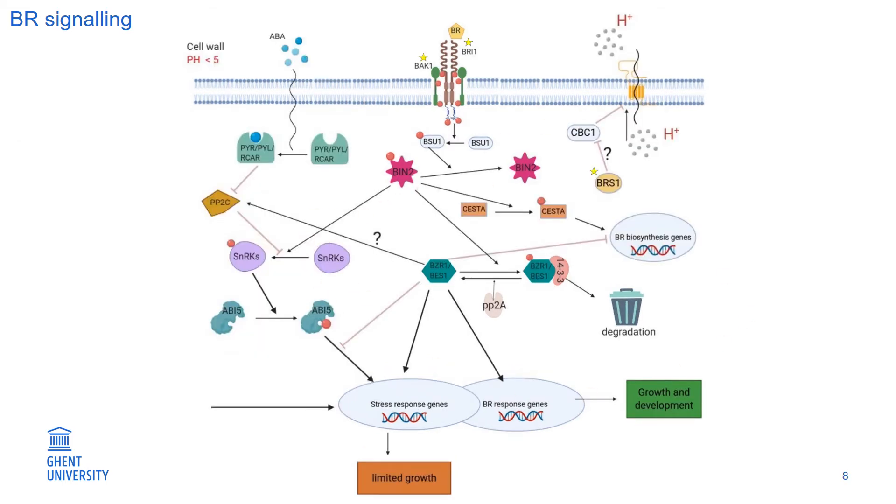But BR signaling is not that simple and there are a lot of crosstalk and interaction between BRs and other hormone signalings. And to study this system, we use lines that have mutation in BAC1, BRI1, and BRS, which have important function in BR signaling.